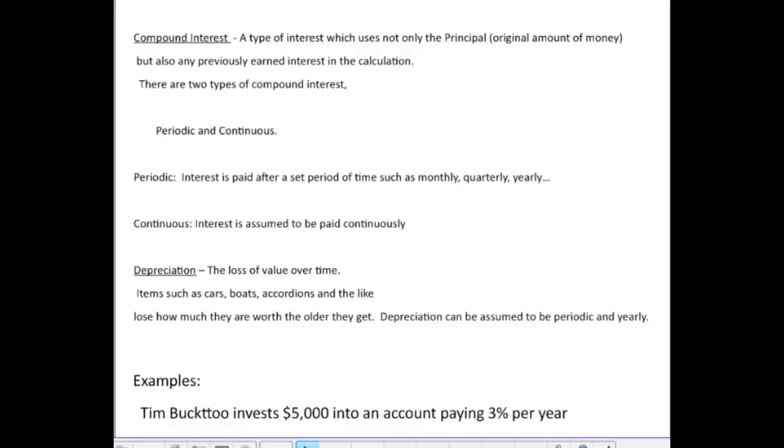Compound interest is a type of interest where not only do you get interest paid on the original amount of money you put into the bank, but if you've already earned interest and they've put it into your account, well, the next time they calculate your interest, they don't just use the original amount like they do in simple interest, but they use the total amount of money that you have in, including any interest that they've already added into your account.